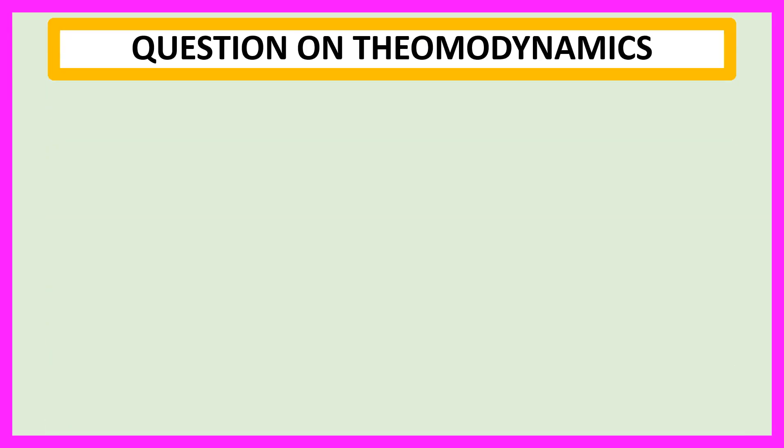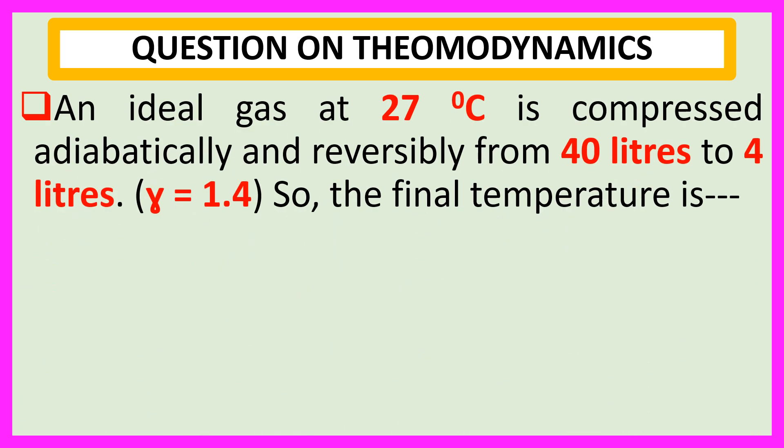Welcome, everyone. Question on thermodynamics. An ideal gas at 27 degree centigrade is compressed adiabatically and reversibly from 40 liters to 4 liters. Gamma is equal to 1.4.